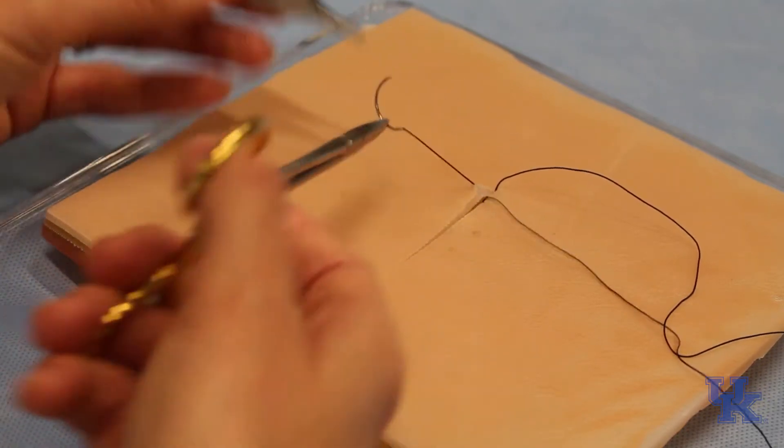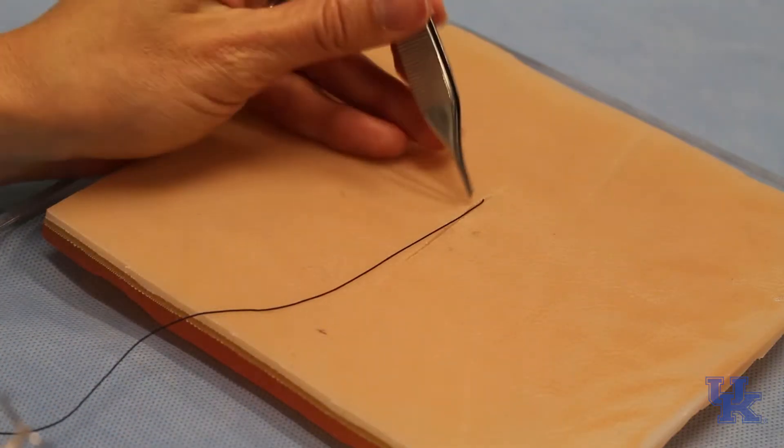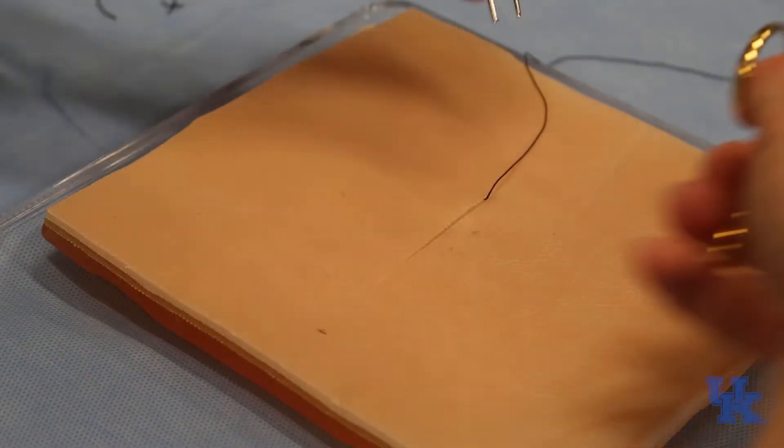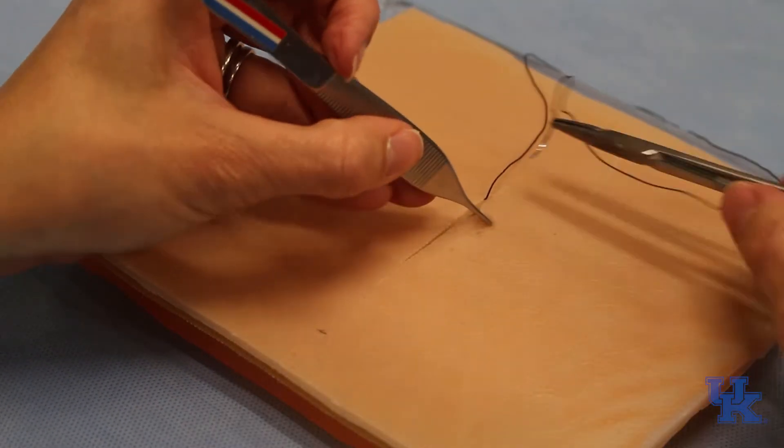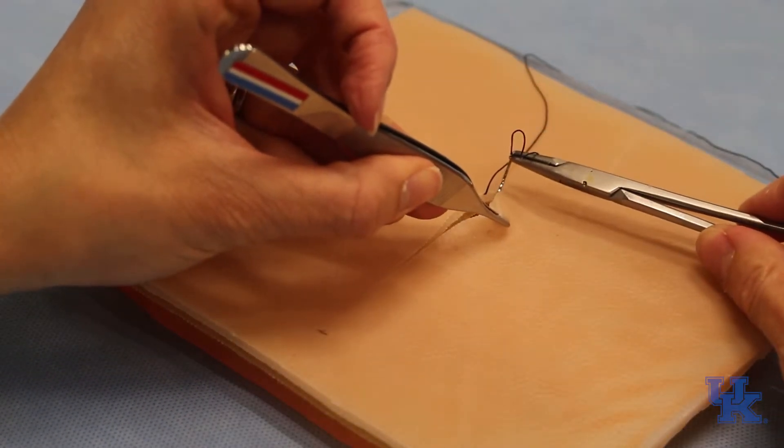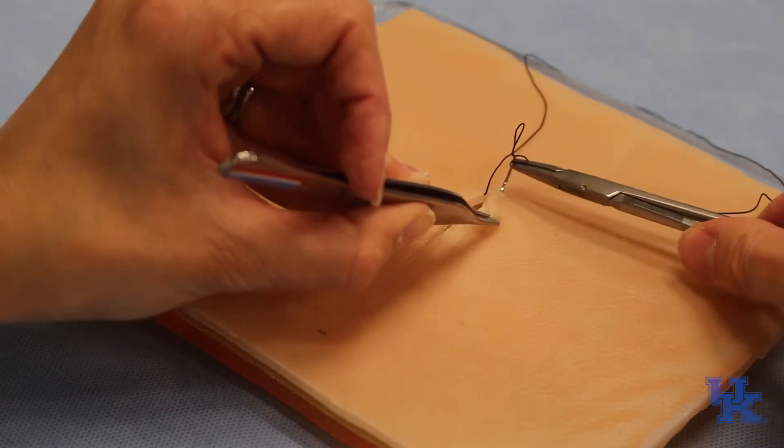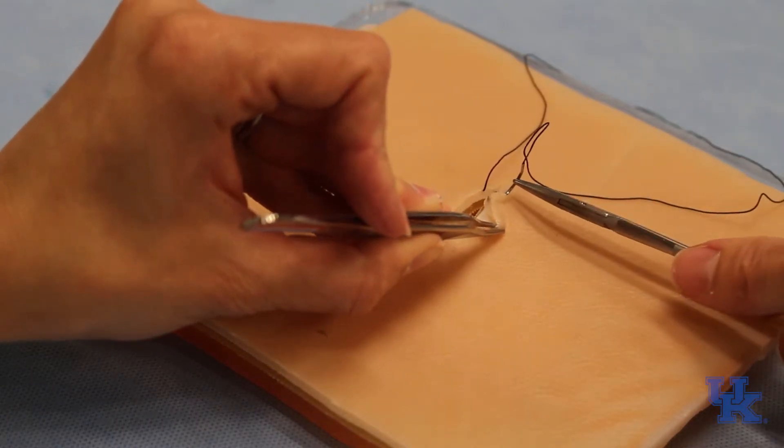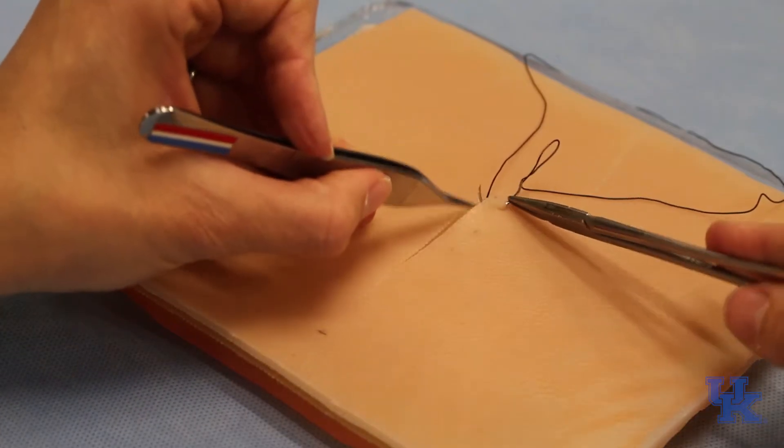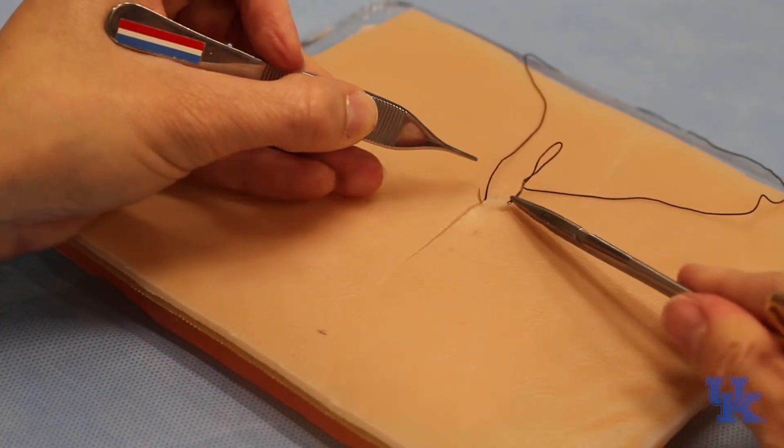Now our suture will be coming out at the level of the subcuticular plane. As we run this, you want to go back in at that same level, and you want to try to go in 90 degrees, rotate back, grab some tissue. You see the tip was coming out. The tip is going to come out further down, and so you're in that dermal area.